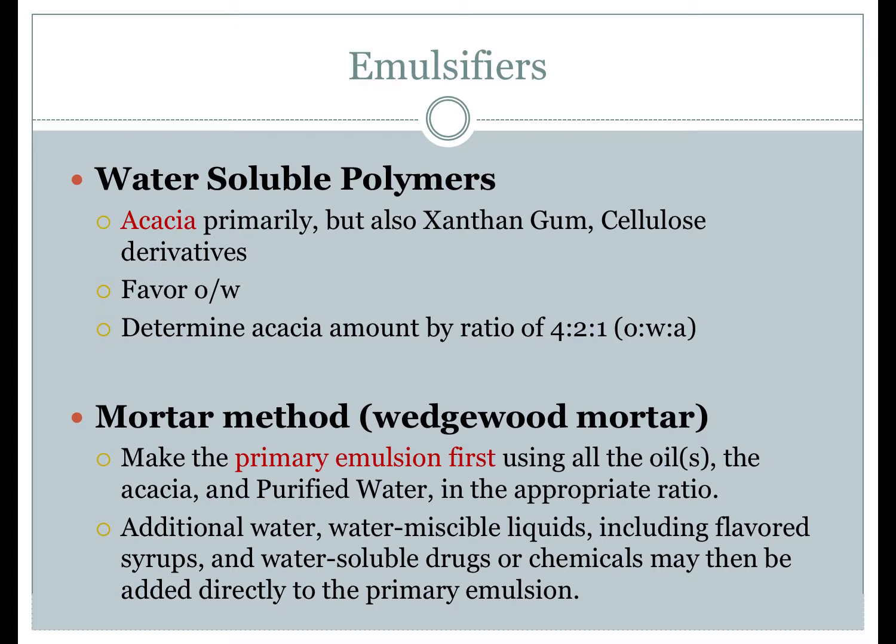To achieve these goals, appropriate use of emulsifying agents is key. There are three main categories of emulsifiers. The first type is water-soluble polymers, of which acacia is the primary example, with others including xanthan gum and cellulose derivatives. Acacia is unique among these polymers in its ability to form an emulsion using only a Wedgewood mortar and pestle, making it useful for extemporaneous compounding. Acacia emulsions favor oil-in-water emulsions. When using a fixed oil such as vegetable or mineral oil, the oil-to-water-to-acacia ratio is 4:2:1.